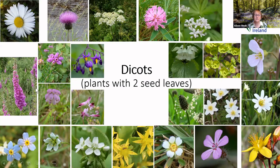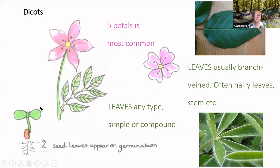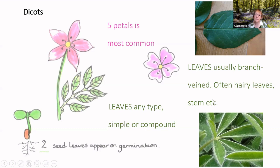Here are examples of dicots or dicotyledons. The difference arises on germination because dicotyledons have two seed leaves. The features are: five petals is most common, though this one has four; leaves can be any type — simple or compound; and the leaves are usually branch-veined rather than parallel. They may have hairy leaves, hairy stem, and so on — these are the features you look for.